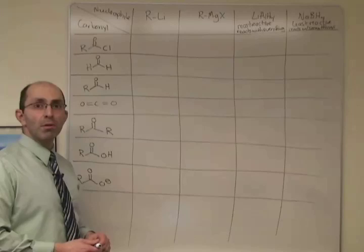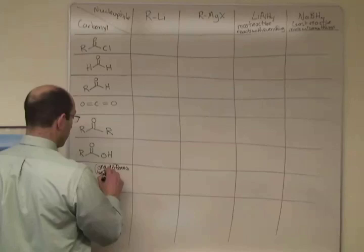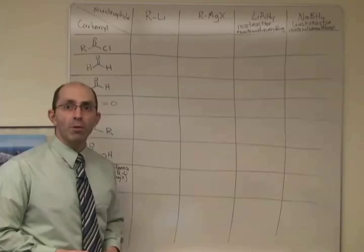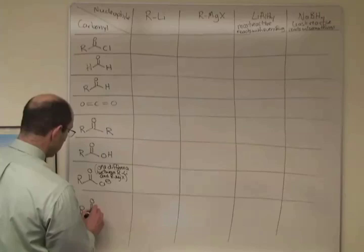And the key here is this is the one difference between RLI and RMGX. So I want you to see if you can figure out what's going to happen in this reaction and what the difference is between Grignard and alkyl lithium. And our final carbonyl is an amide.